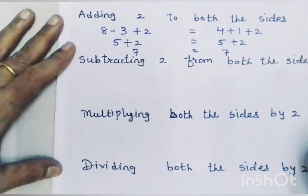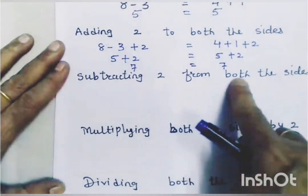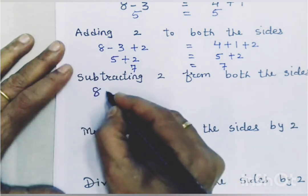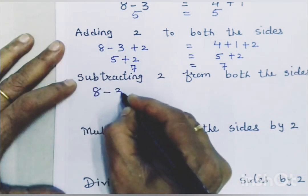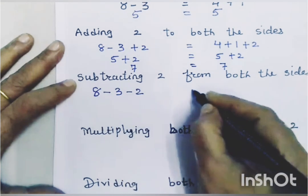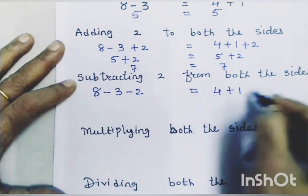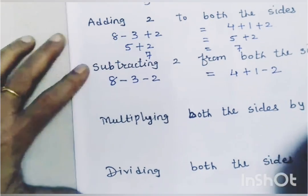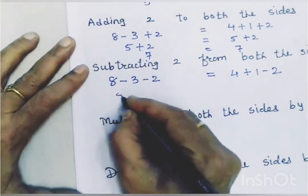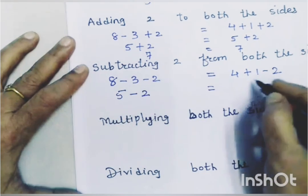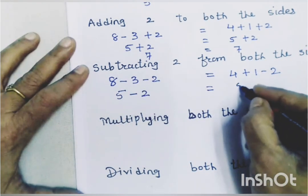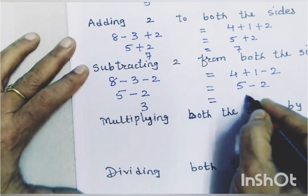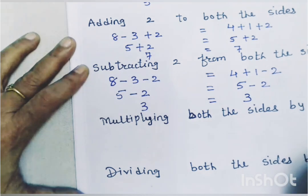Now let us subtract 2 from both the sides. That is 8 minus 3 minus 2 is equal to 4 plus 1 minus 2. So 5 minus 2 equals 5 minus 2, giving us 3 equals 3. The equation still holds.